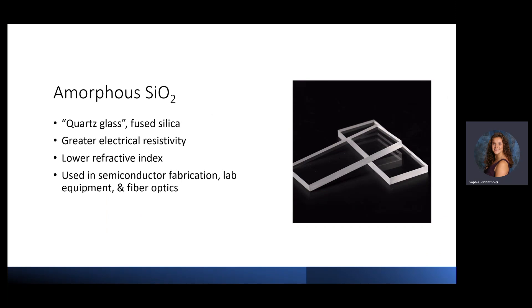Quartz glass, or fused silica, refers to the amorphous form of pure silicon dioxide. This material has greater resistivity than crystalline SiO2, meaning that it is a better electrical insulator, although both forms are great electrical insulators. Fused silica also has a lower refractive index. Light travels faster in materials with lower refractive indices.